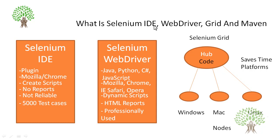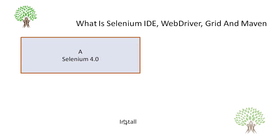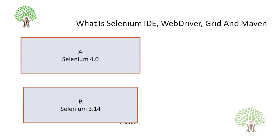So these are the three major components: IDE, WebDriver, Grid. Now what is Maven? The first thing is that you have to configure Maven on your PC — it is not installed, it is configured. To understand it, you have to understand one simple example: suppose you have a team of two people A and B, and you distribute your scripts among them. A starts building the scripts, B also starts building the scripts.